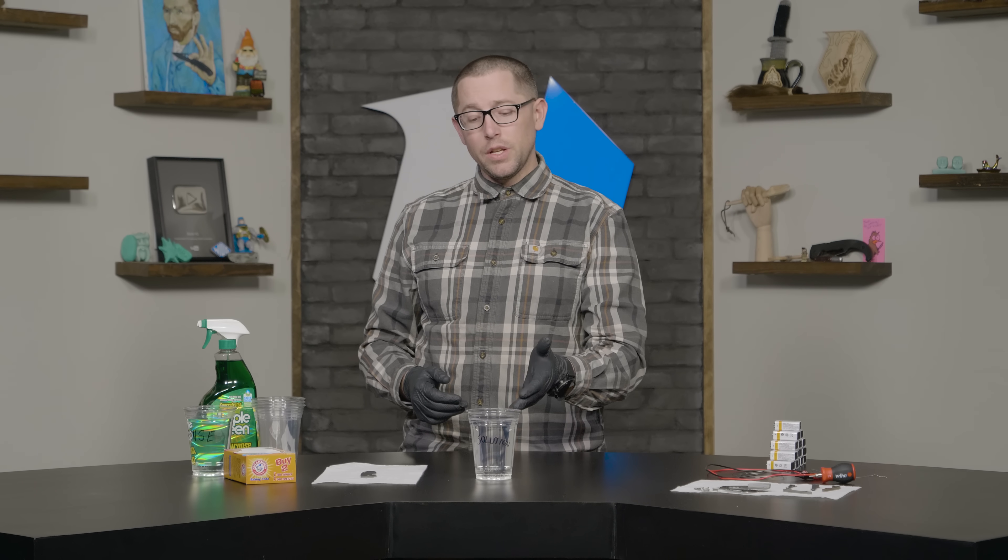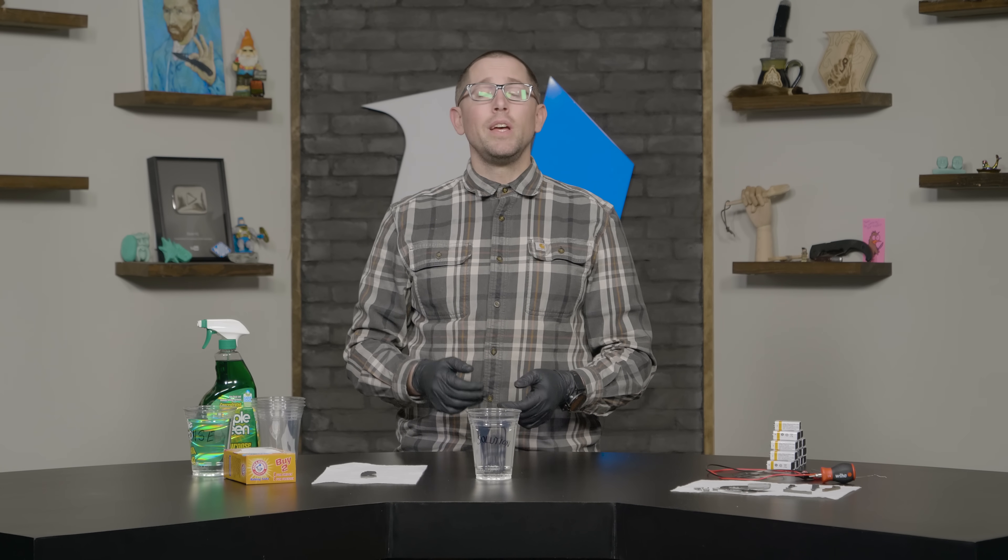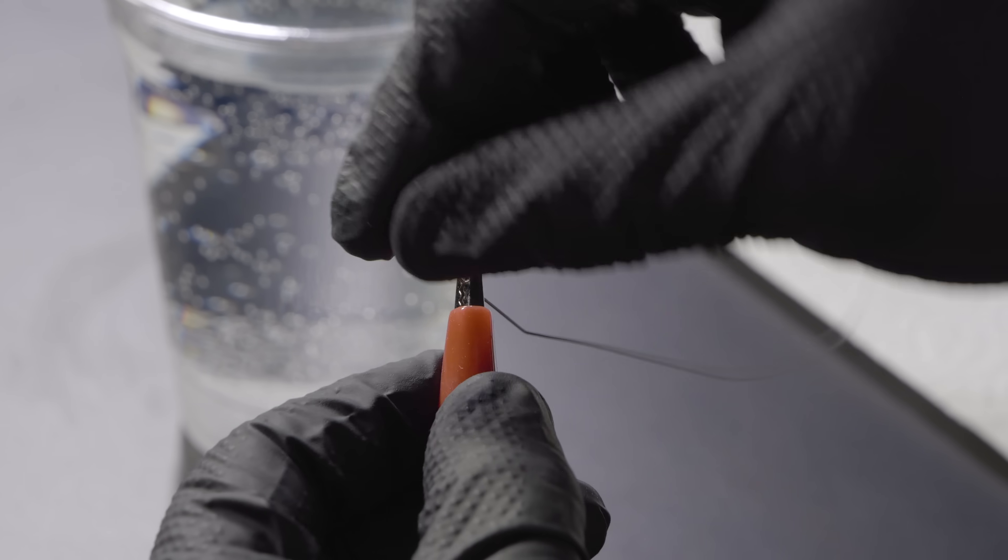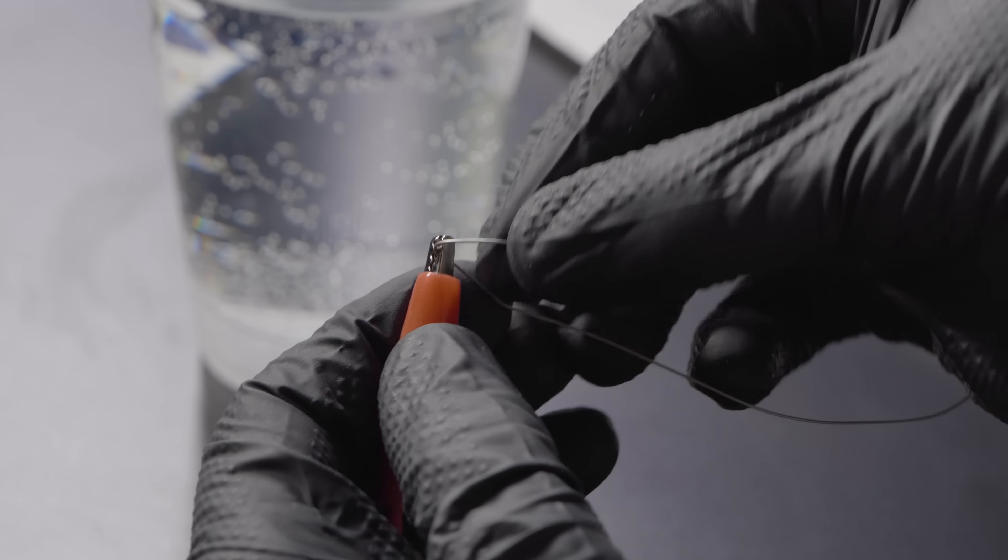So now that you have your titanium piece cleaned, your electrolyte solution mixed up and ready to go, it's time to establish your positive and negative connection or your grounded and hot connection to start anodizing. To make our positive connection, we're going to be using this red alligator clip and this titanium wire. I'm just going to put the clip right to the titanium wire just like this and we'll hook it up to the battery here in just a moment.